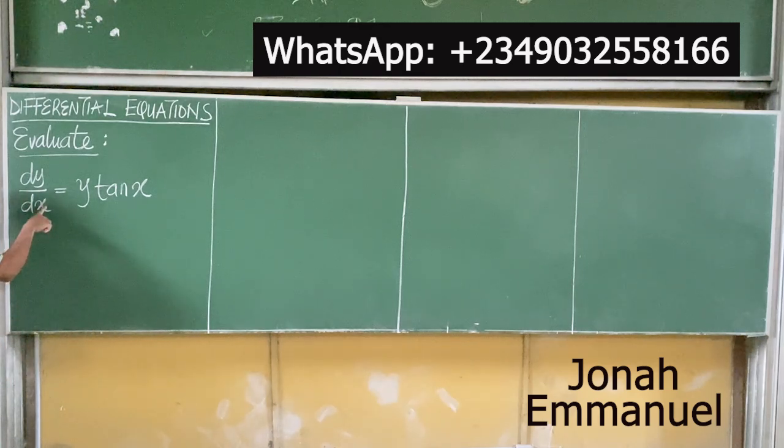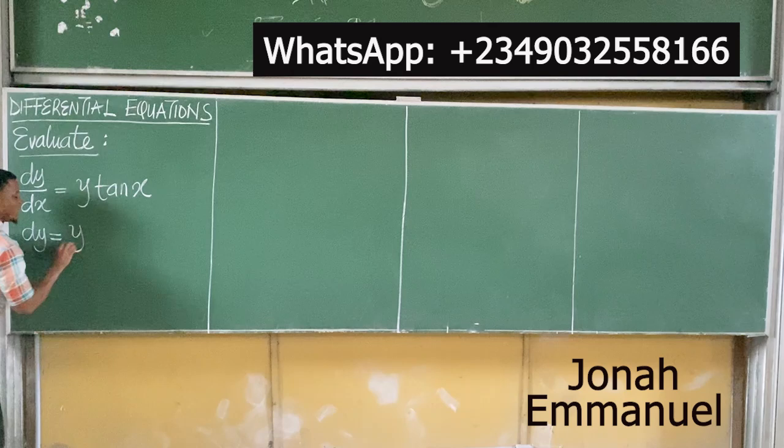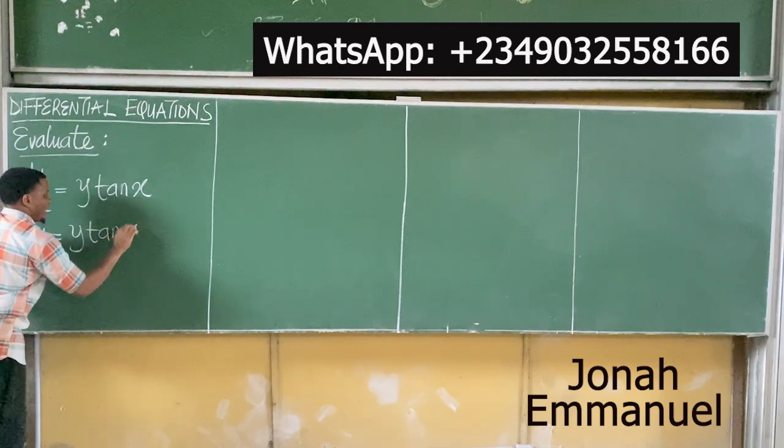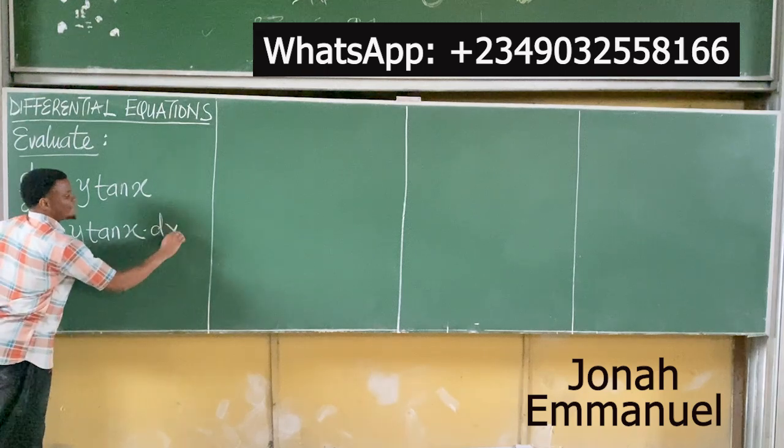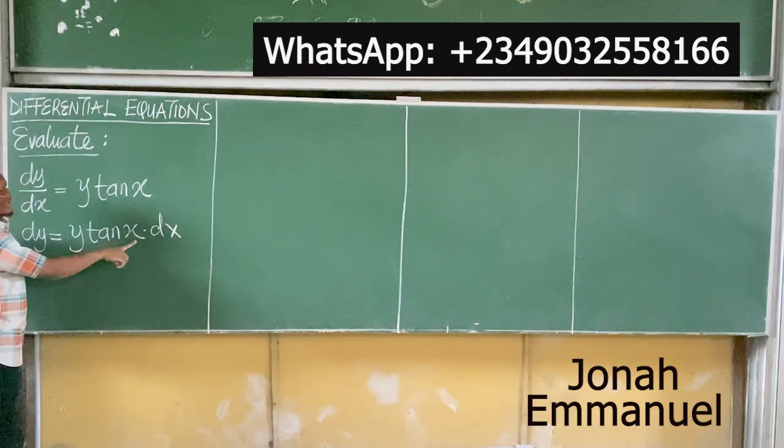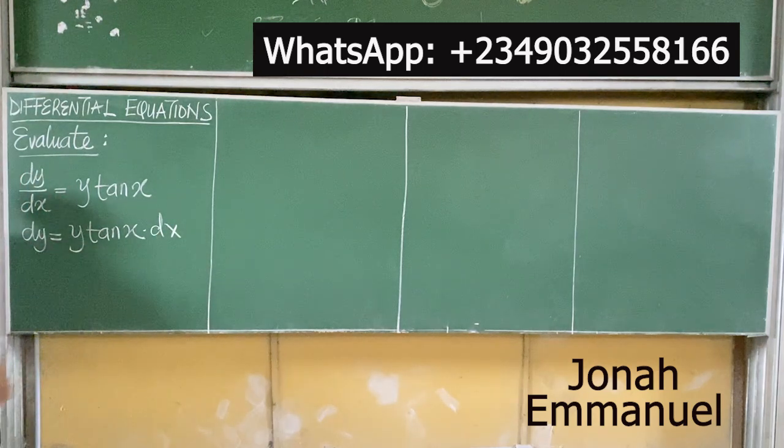The first thing to do, move the x over here. So I have dy = y*tan(x). The x comes here, becomes dx. See that I've moved my x term as well as the dx to the right hand side.